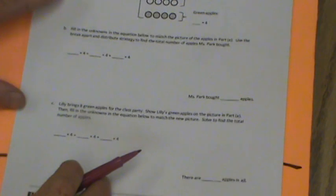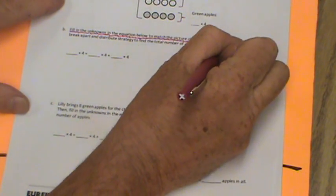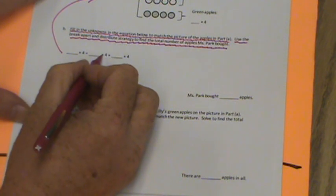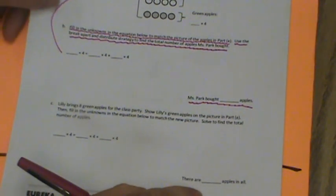All right, I'm going to continue on. So pause if you need to to finish this. Don't do this yet. We're going to go to B now. It says fill in the unknowns in the equation below to match the picture of the apples in part A. Part A is up here, right?